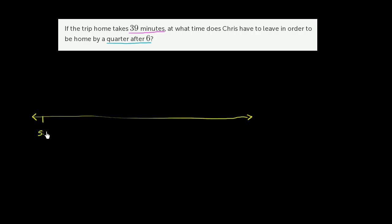So let's say that this is 5 o'clock. This is 6 o'clock. And they don't specify whether it's AM or PM. And this is 7 o'clock.